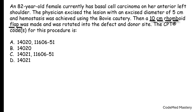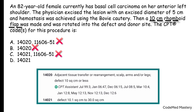In the question they mention a 10-centimeter rhomboid flap was made and rotated into the defect and donor site — this is an adjacent tissue transfer procedure. Remember: if a flap is mentioned, it is an ATT procedure. According to the guidelines, along with ATT we should not code lesion excision, so we can directly eliminate options A and C. This is why knowing the guidelines is very important to eliminate wrong options.